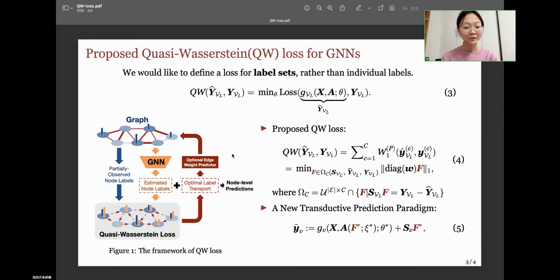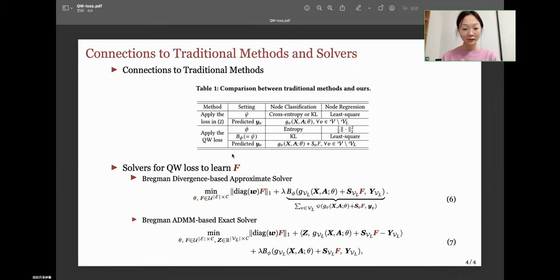As shown in the edge portion in Figure 1, satisfying the constraint of omega C. Similarly, the learned F is then added to the output of the neural networks, contributing to the final prediction result, leading to a new transductive prediction paradigm. Table 1 shows the difference between traditional methods and our QW loss.